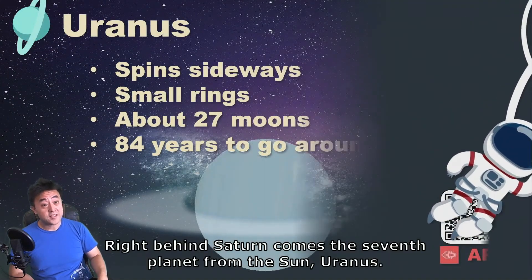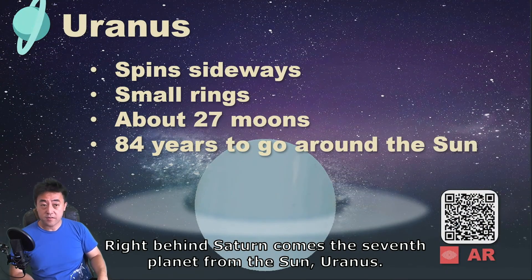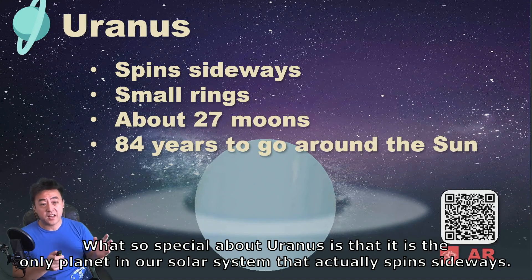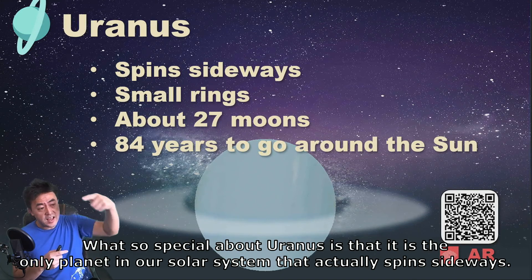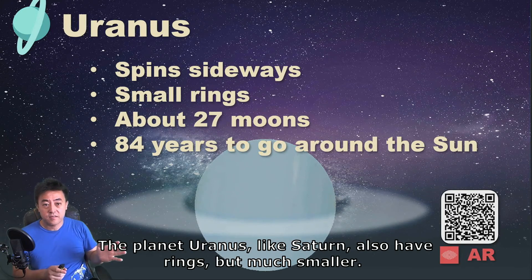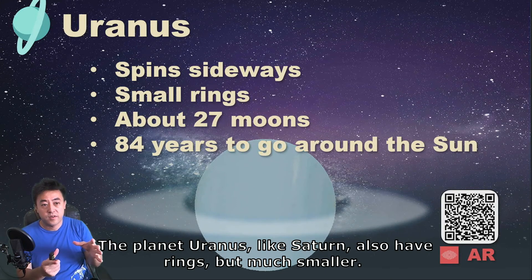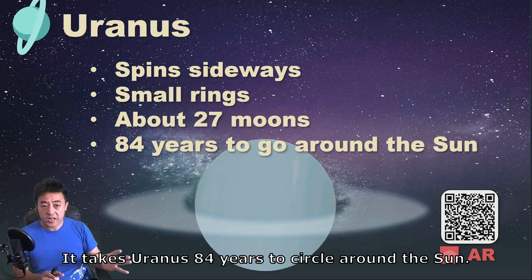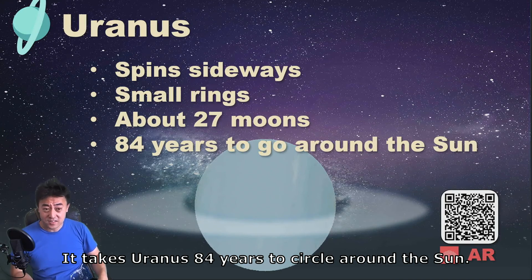Right behind Saturn comes the seventh planet from the sun: Uranus. What's so special about Uranus is that it's the only planet in our solar system that actually spins sideways. Like Saturn, Uranus also has rings, but much smaller, and it also has about 27 moons orbiting around it. It takes Uranus 84 years to circle around the sun.